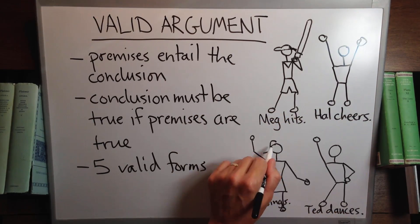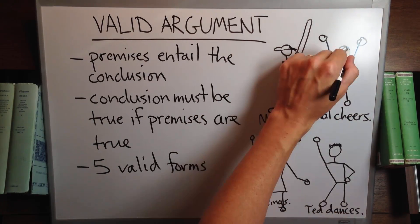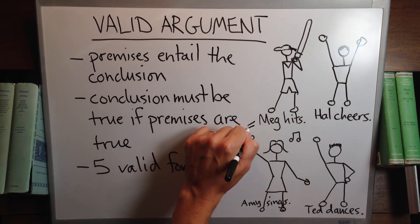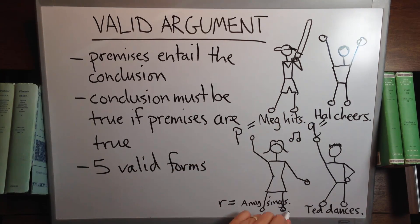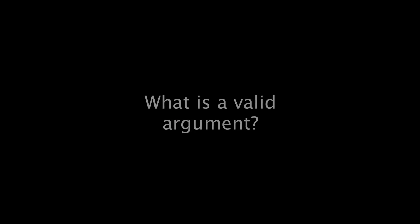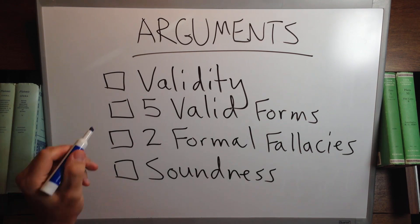I'm going to show you five valid forms of argument. Let's get some statements on the board: Hal cheers, Meg hits, Ted dances, and Amy sings. We'll call them P, Q, R, and S. A valid argument is one in which the conclusion must be true if the premises are.